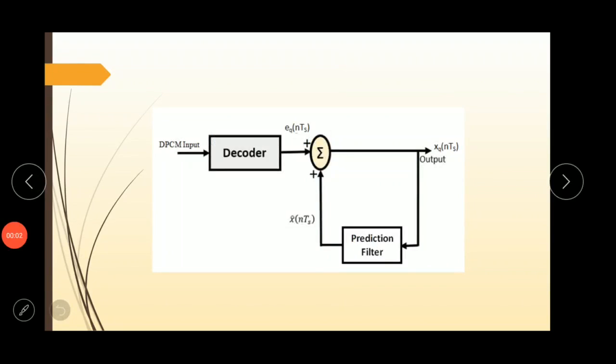This is the block diagram. It consists of decoder, prediction filter and one adder. The decoder first reconstructs the quantized error signal from incoming binary signal. To the input of the decoder, we give the received DPCM signal.